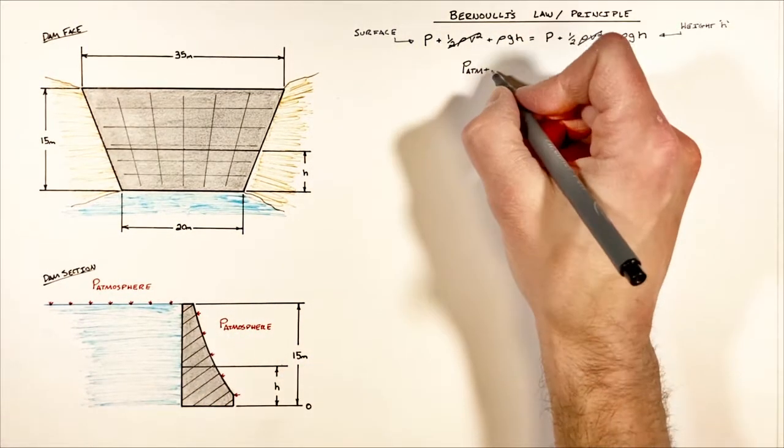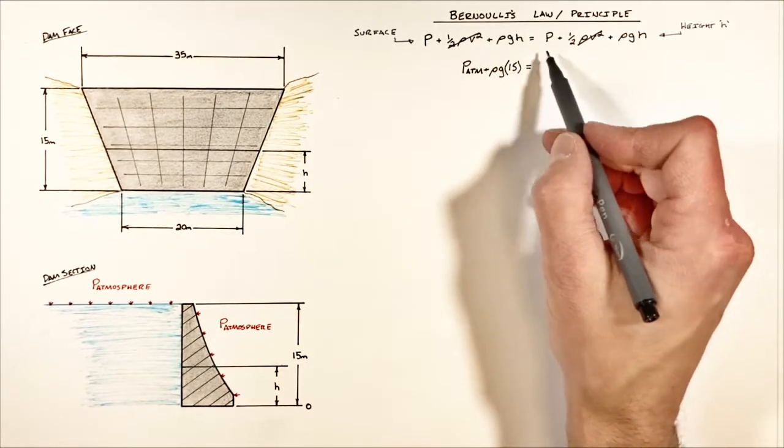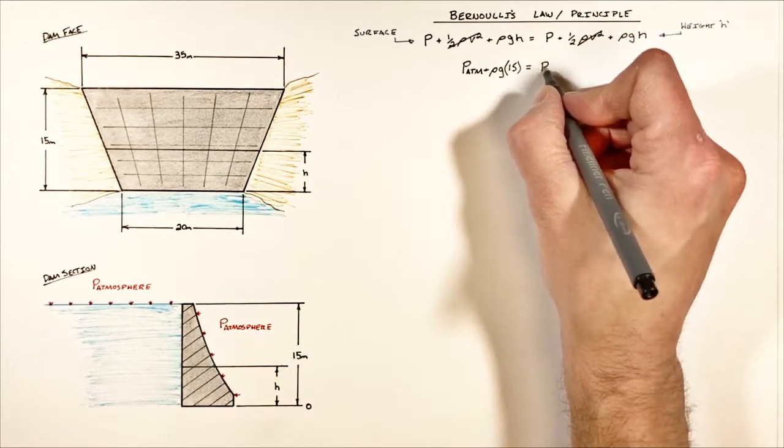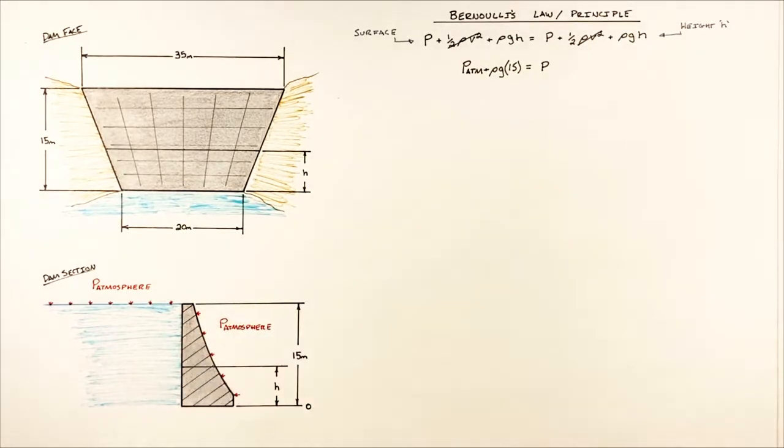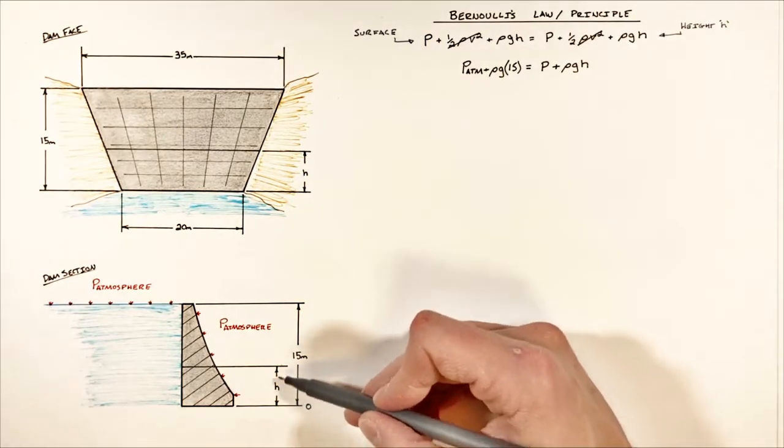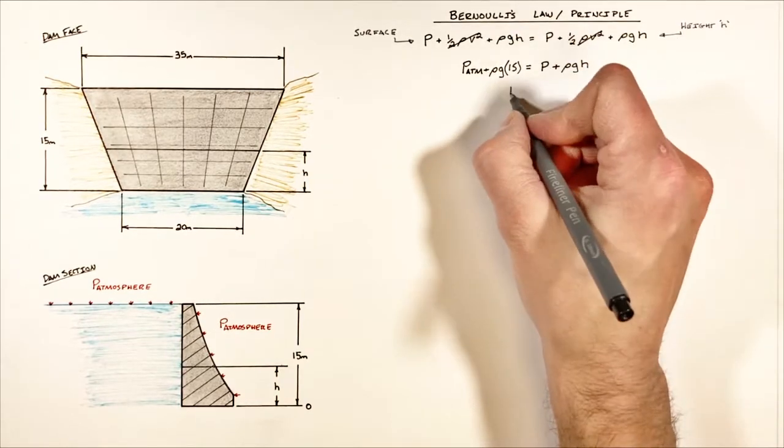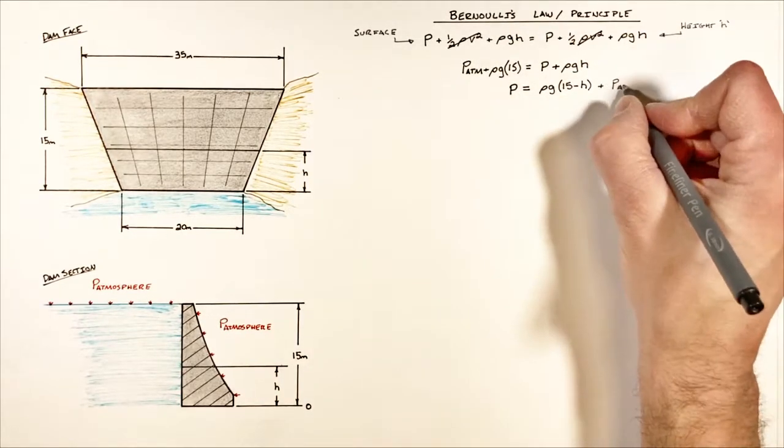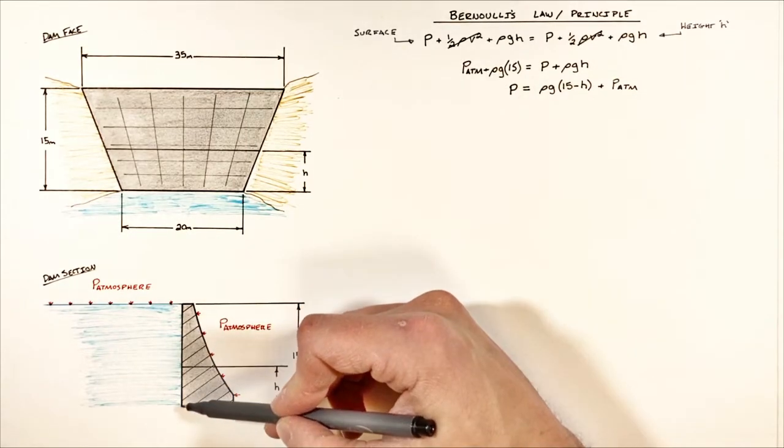On the other side of Bernoulli's law, we're going to have some pressure P that's going to be the static pressure acting against this wet dam face, plus rho g h, where h is whatever height we choose to look at. In rearranging this equation a little bit, we come up with an expression for the total pressure against this wet face of the dam.